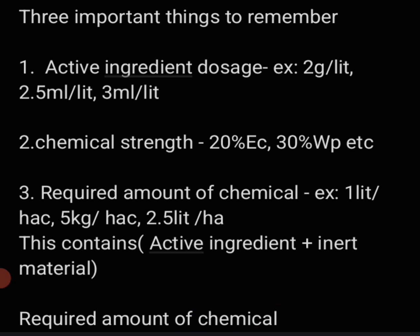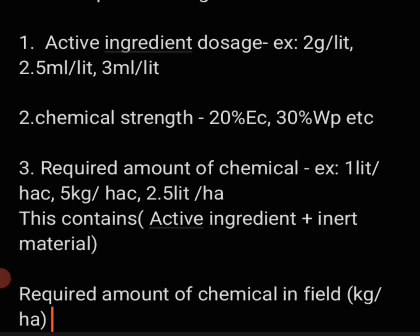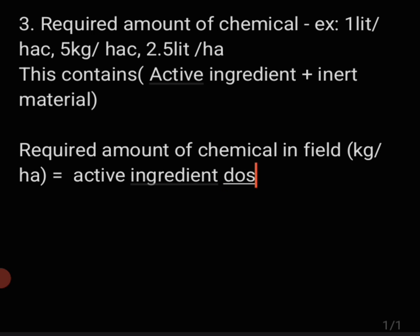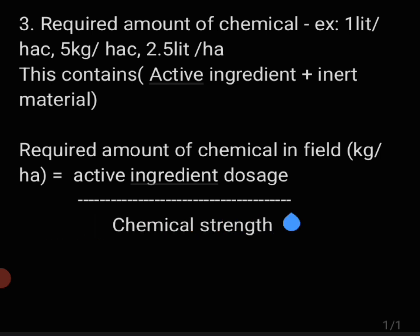The third important thing you need to know is the required amount of chemical — how much chemical is required to spray in an area of 1 acre or 1 hectare. For example, it may be mentioned that 1 litre of pesticide should be sprayed per hectare, or 5 kg of dust per hectare, or 2.5 litres of pesticide per hectare. In that 1 litre, there will be both the toxicant as well as the inert material.